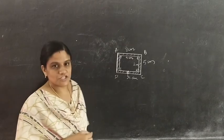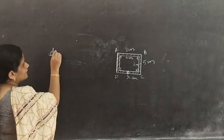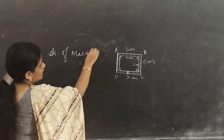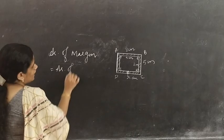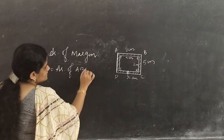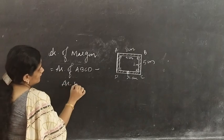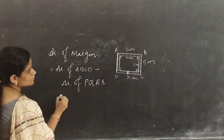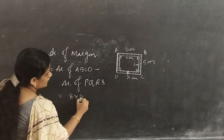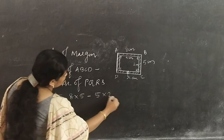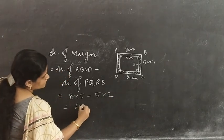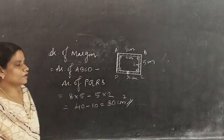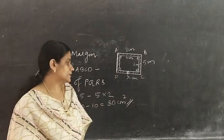Now we have all the measurements. Area of margin equals area of ABCD minus area of rectangle PQRS. That is 8 into 5 minus 5 into 2, which is 40 minus 10, giving you 30 cm square. Therefore, area of the margin is equal to 30 cm square.